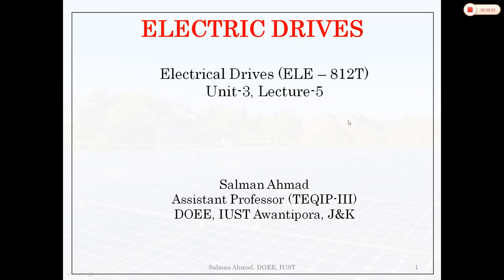Hello everyone. This is the 5th lecture in Unit 3. In this lecture I will discuss the continuous and discontinuous mode of operations. I will take Class A chopper and separately excited DC motor to derive the boundary conditions between continuous and discontinuous conductions. Based on this discussion, you can also derive for Class B, 2-quadrant and 4-quadrant separately excited DC motors — I will leave that as an exercise for you.